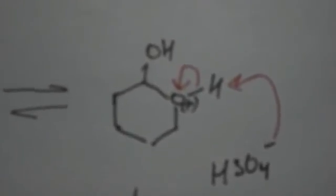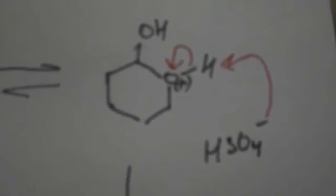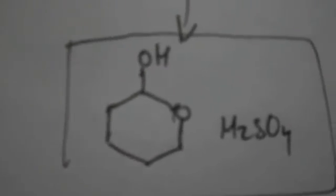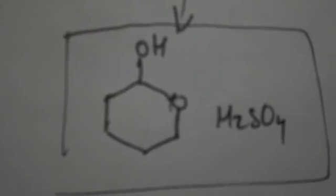Since we have HSO4 minus in the system, we will use that to attack the hydrogen to cleave that off the positive oxygen and to give the electrons back to the oxygen. That would lead us to the hemiacetal that we see over here with HSO4 back into the system.